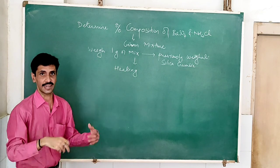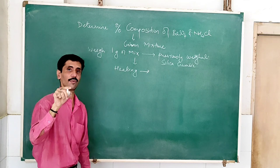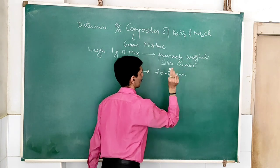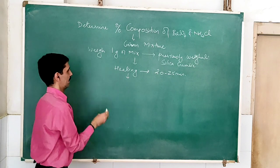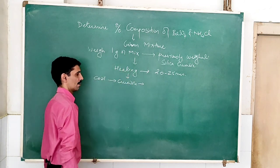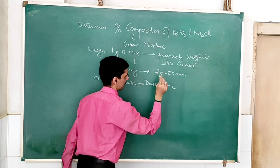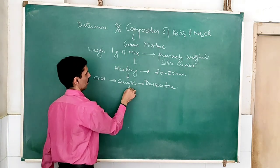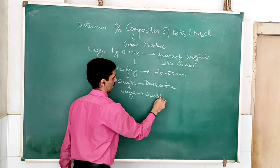What are the apparatus required and what is the technique of heating? Heating has to be done of this crucible containing one gram of the mixture, and that heating has to be done for roughly 20 to 25 minutes. Next, we need to cool the crucible in a desiccator, and then weigh the crucible again.